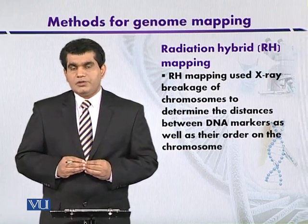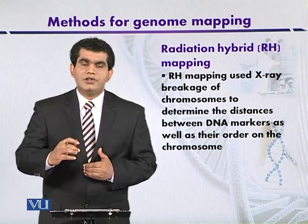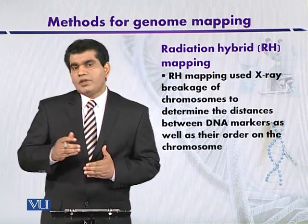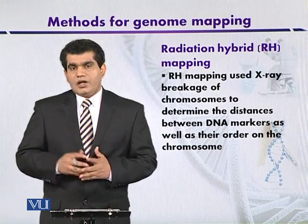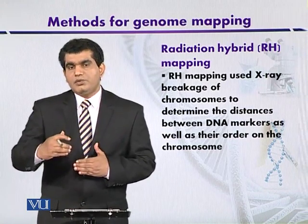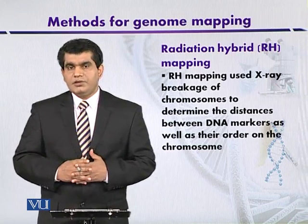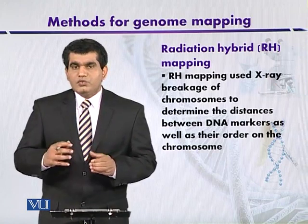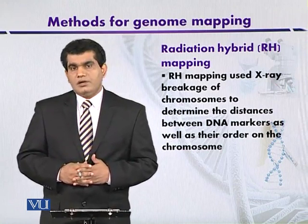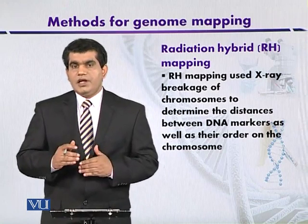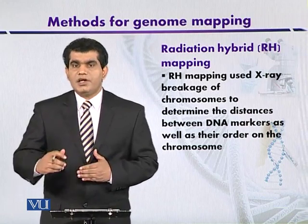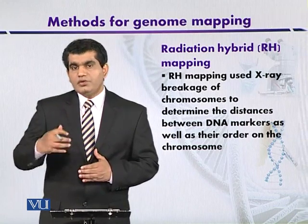So we have two cell types: a human cell that has been irradiated with X-ray and whose DNA has been fragmented into different fragments randomly, and a hamster cell, which is a rodent cell from a rodent organism. The hamster cell is not exposed to X-ray, so it is unirradiated. Both of these cells can be fused together — the irradiated cell acts as the donor DNA, and the unirradiated rodent cell acts as the host or recipient cell.